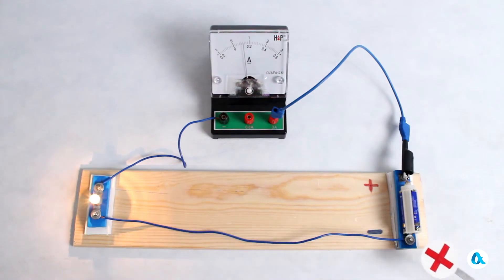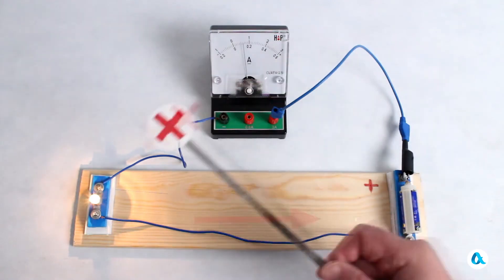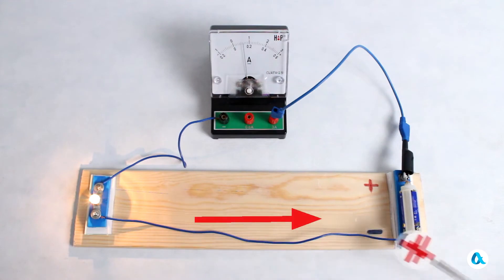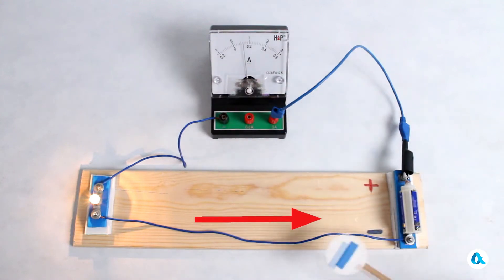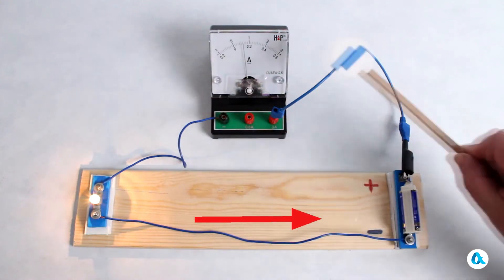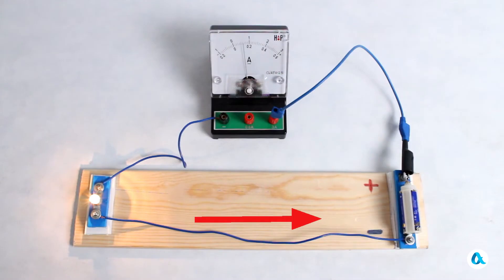And the direction of the current in the circuit coincides with the direction of movement of the positive charges. But in reality, we know that it is negatively charged electrons that move through the circuit. And they travel in the opposite direction, passing through the light bulb and the ammeter, returning to the battery. However, the direction of the current in the circuit remains the same.